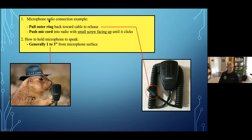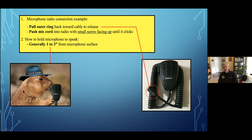Microphones connect to the radio — you pull the outer ring on the cable connection to release it, then to connect it, line up that little screw on the top, push until you hear a click. For speaking into the microphone, one to three inches is usually good enough to kill background noise and allow you to speak clearly to the receiver.